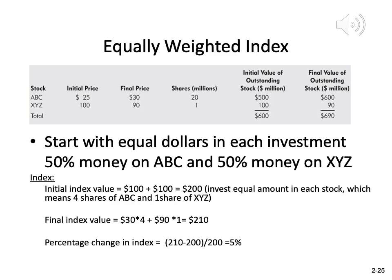Finally, let's calculate the equally-weighted index using the same two stocks. With only two stocks and equal weighting, we put 50% in ABC and 50% in XYZ. Suppose we invest $100 in each: $100 buys four shares of ABC at $25, and one share of XYZ at $100. Initially we have $200 invested in the index. The final index value is the new price times shares purchased: $30 times four shares plus $90 times one share = $120 plus $90 = $210. The percentage change is 5% — a gain.